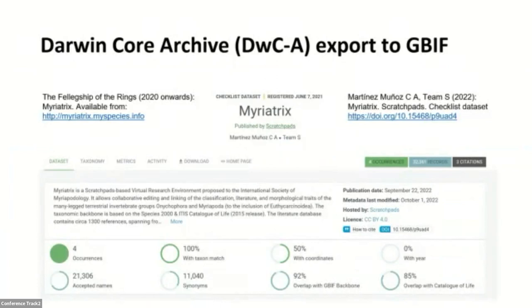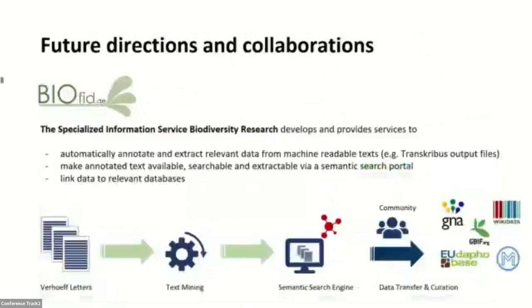We used the Scratchpad Darwin Core exporter to create a dataset and send it to GBIF. This Darwin Core archive of Miriatrix you can explore in GBIF itself. Please, if you are going to reuse it and cite it, always cite the platform — the database itself — in addition to the citation of the dataset provided automatically by GBIF. Regarding future directions, we plan to automatically annotate and extract relevant data from machine-readable texts provided by Transkribus output files, make that annotated text available, searchable, and extractable via our semantic search portal, and link it to further relevant databases.